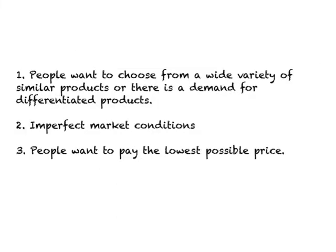To understand intra-industry trade, we need to understand characteristics of developed or industrialized countries. First, people generally want to choose from a wide variety of similar products — there is demand for differentiated products that are similar but not exactly the same. For example, there are probably 100 or 200 varieties of potato chips available in the US. Similarly for cars, clothing, and so on. In rich countries, people can also afford this variety.